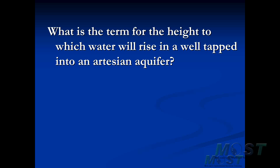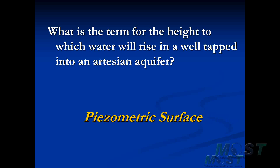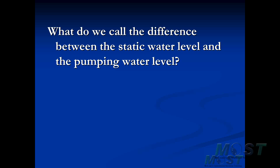What is the term for the height to which water will rise in a well tapped into an artesian aquifer? When we put the well down, the water level doesn't stop at the top of the aquifer — it goes to where the pressure pushes it, rising to what we call the piezometric surface. What do we call the difference between the static water level and the pumping water level? Looking at the hydraulics of wells, we call this the drawdown — the vertical distance between the static water level and the pumping water level.